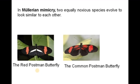Müllerian mimicry is where two equally noxious species evolve to look similar to each other. The red postman butterfly develops a colouration similar to the common postman butterfly. They have a breeding barrier, yet they develop similar colouration.